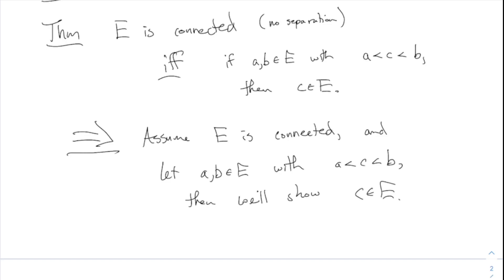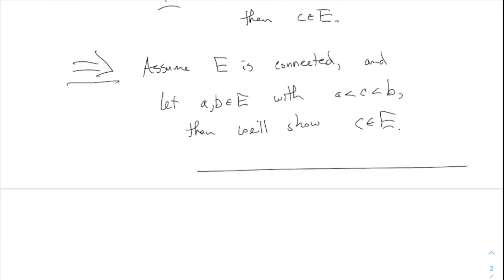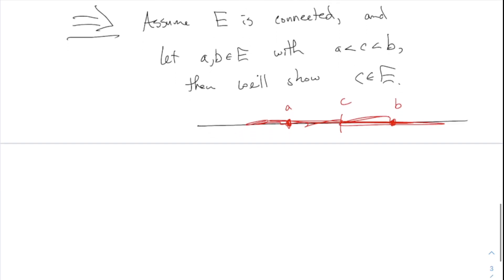The idea: draw E — it's connected, so I drew it looking connected — with a and b in E. c is somewhere in the middle, and we have to prove c is also part of E. On the picture it looks obvious, but we actually have to demonstrate it. This works out nicely if you prove by contradiction, so assume for the sake of contradiction that c is not in E.